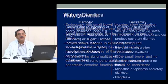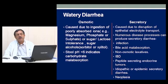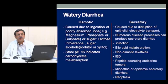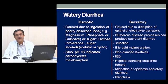The next step is watery diarrhea. Watery diarrhea could be osmotic or secretory. Osmotic diarrhea is caused by ingestion of poorly absorbed ions — magnesium, phosphate, and sulphate found in antacids — or lactose intolerance, or sugar alcohols such as sorbitol and xylitol. Stool pH should be less than 6. In osmotic diarrhea, if you ask the patient not to eat anything, the diarrhea settles down — that is, stool volume decreases with fasting, which is indicative of osmotic diarrhea. The fecal osmotic gap is also an important parameter.